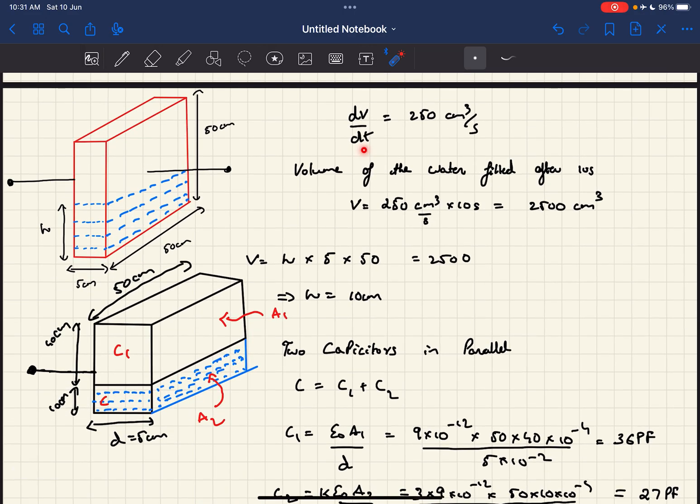As the volume flow rate is constant, we can easily find out the volume of the fluid poured into it after 10 seconds. It will be 250 times 10, which equals 2500 cm³.